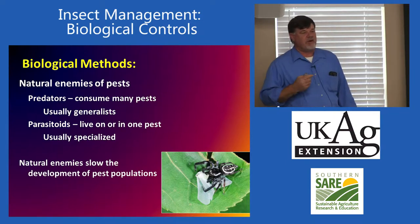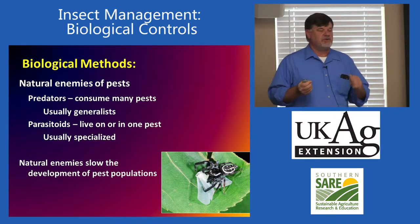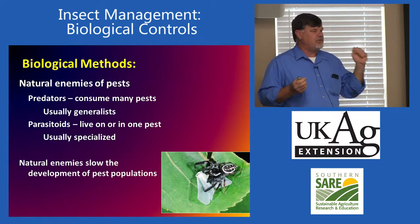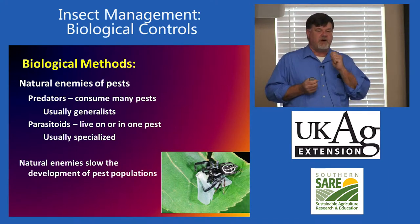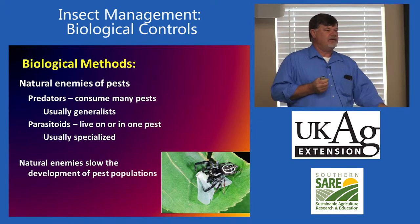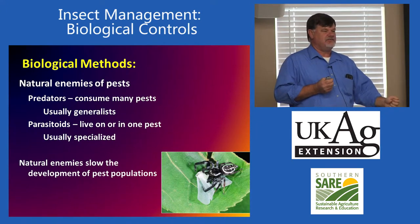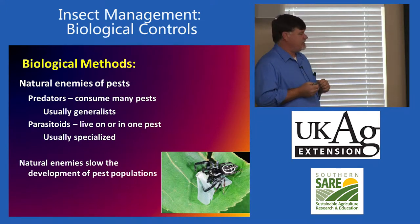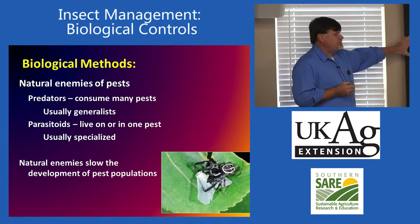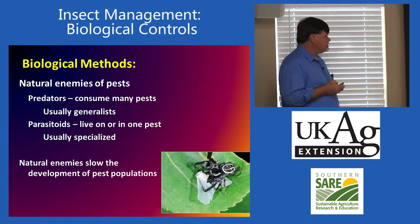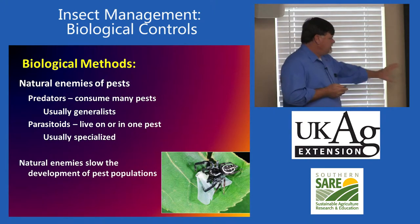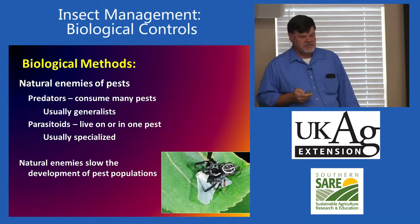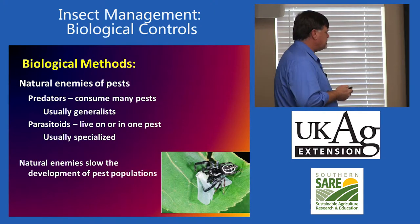Parasitoids, on the other hand, are very specific. Some parasitoids will only attack one species of insect, and it's always a one-to-one: one parasitoid is going to kill one single individual of that pest population. But a lot of times they can build up in large numbers and be very helpful. So what we're looking at is natural enemies to slow the development of populations.